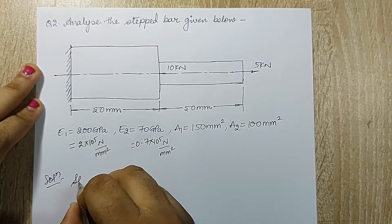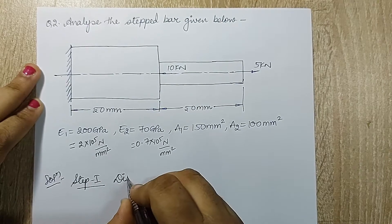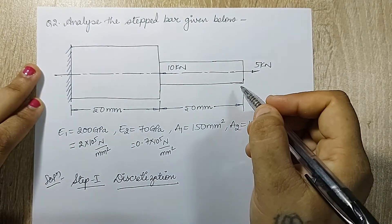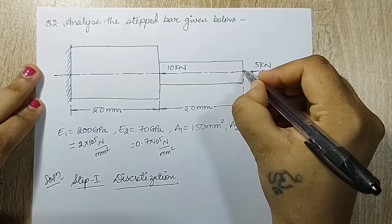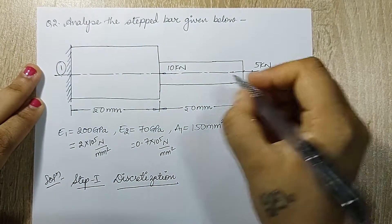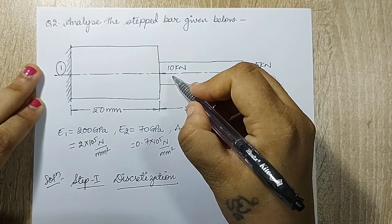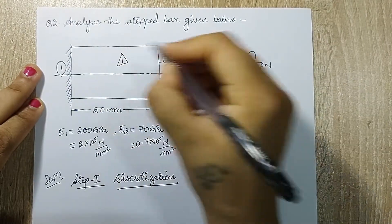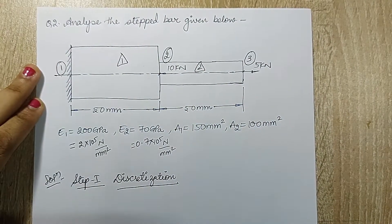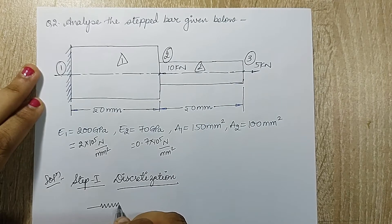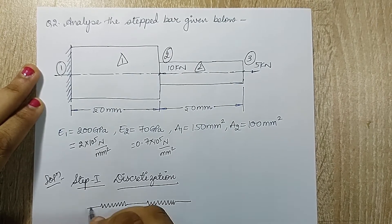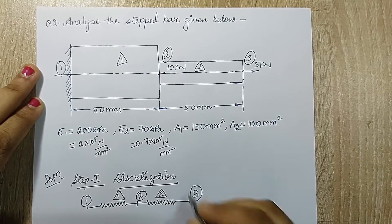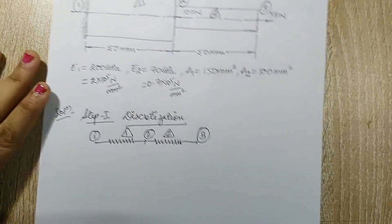For finding the solution I'll start with step 1 which is discretization diagram. For the diagram I will see this figure given to me. These two are the ends so I'll be marking two nodes at these two points. There is a change of cross-section, there is a sudden loading over here and also there is change of material, so this is a point where a node is supposed to be marked. I can see three nodes and two elements, two bars given to me. Element 1 is between node 1 and 2, element 2 is between node 2 and 3. This is the discretization diagram required.